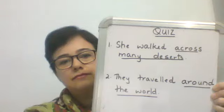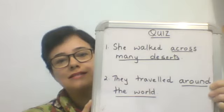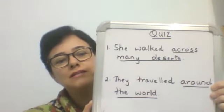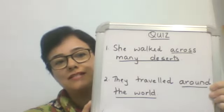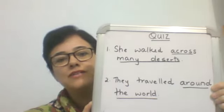There are other kinds of phrases too, but these five are the main kinds covered in this lesson. Now, if you have understood this lesson well, here is a short quiz. Let's see if you can look at the sentences shown and identify what kind of phrase is in each one. The first two sentences are: 'She walked across many deserts' — the phrase is 'across many deserts'; and 'They traveled around the world' — the phrase is 'around the world.'